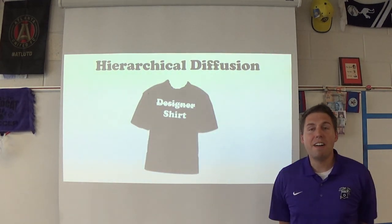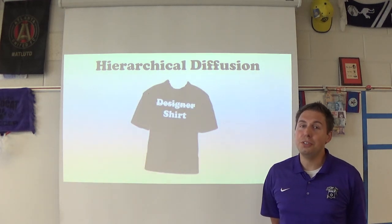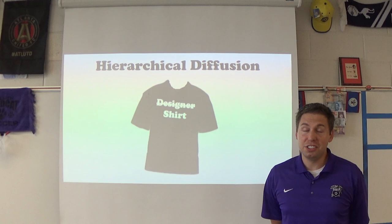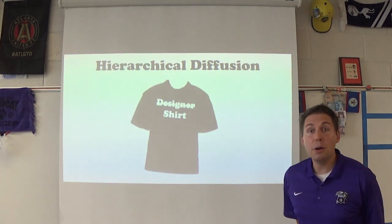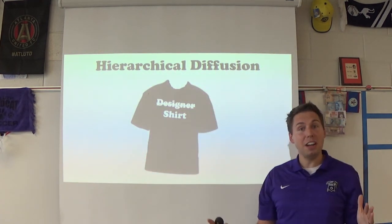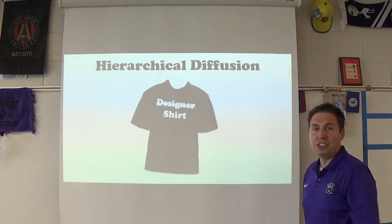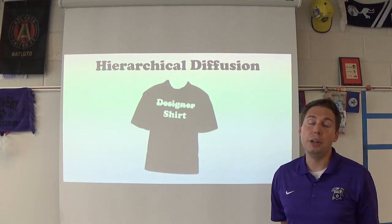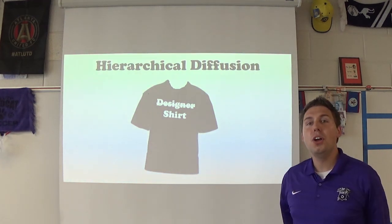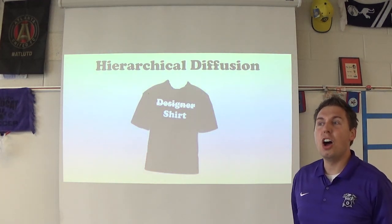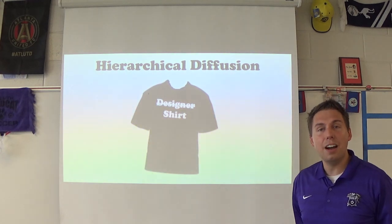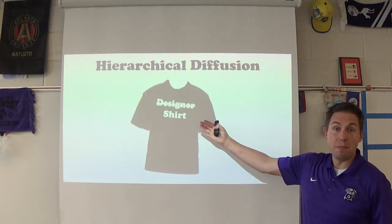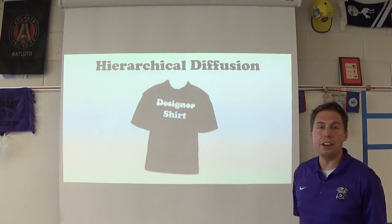Next we have hierarchical diffusion. Hierarchical diffusion is easy to understand. Hierarchy means something is working from the top down. Fashion is something that comes from the top down — the masses do not do what other masses do. They do what an iconic person would do. So let's look at this thousand-dollar shirt with a strikethrough designer label — basically it just says 'shirt.' Let's see how this diffuses.